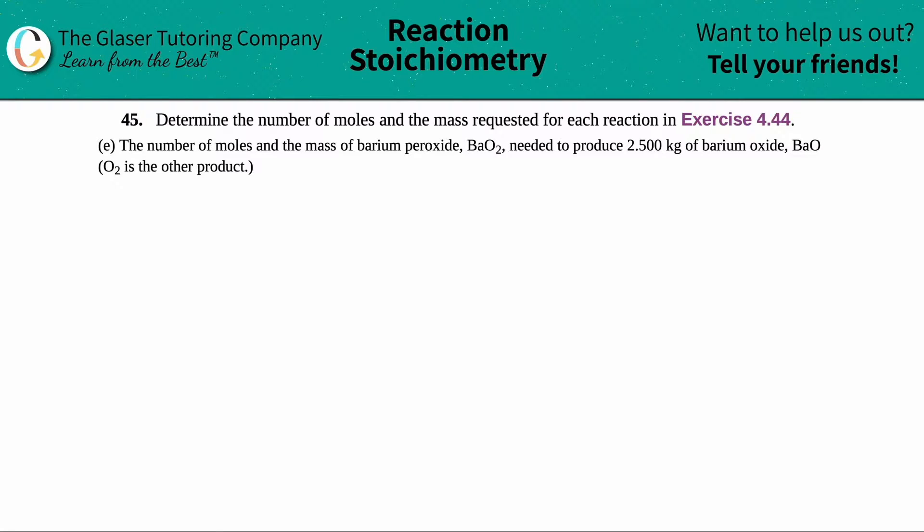Number 45, determine the number of moles and the mass requested for each reaction in exercise 4.44. We have letter E out of those questions. In letter E they want us to find out the number of moles and the mass of barium peroxide, which is BaO2, which is needed to produce 2.500 kilograms of barium oxide BaO. They give us a little tip here. They say that O2 is the other product.